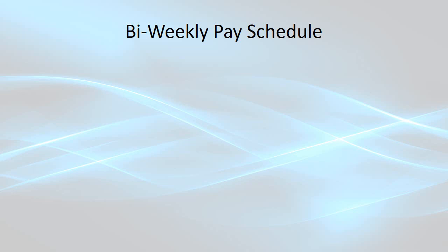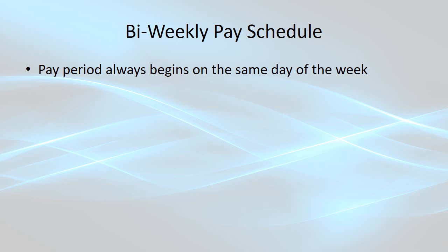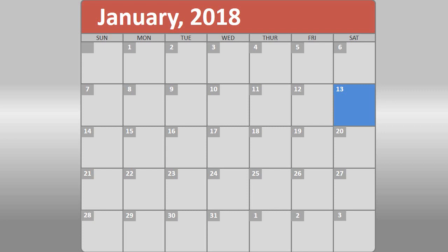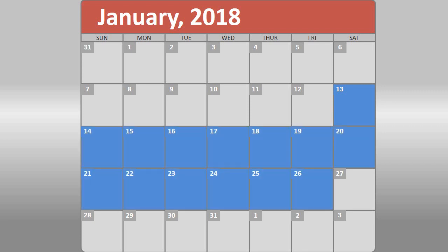Now let's talk about the more complex bi-weekly pay schedule. Bi-weekly pay schedules, according to the state retirement agencies OPERS and OP&F, must begin on the same day of the week established by your governing board — your board determines if the pay period begins on Saturday, Sunday, or Monday, and whatever day they establish is always the pay period begin day. A bi-weekly pay period contains exactly 14 days, never more and never less. In Sample Buckeye Township, our bi-weekly pay period begins on a Saturday, is 14 days long, and ends on a Friday. At the end of the pay period on Friday, employees are required to turn in their time cards, and the next pay period begins on Saturday.